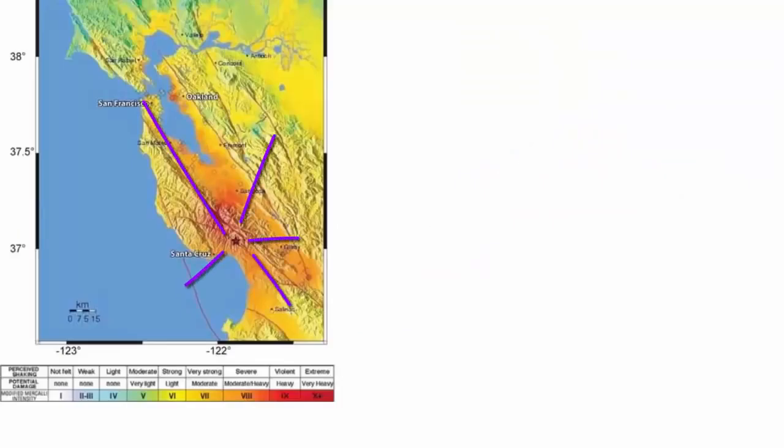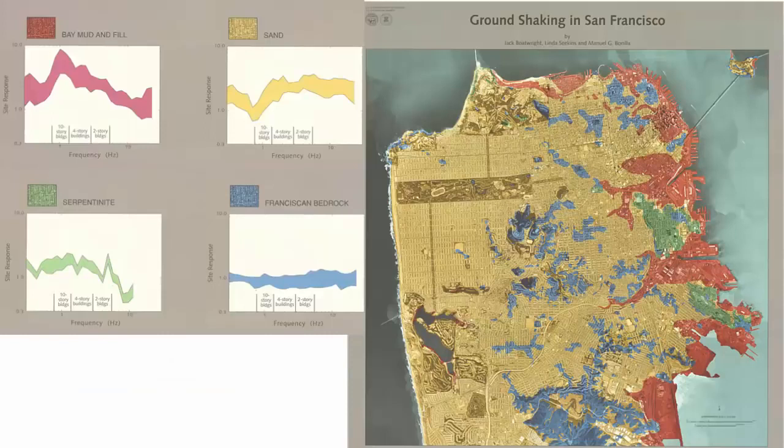In general, surface waves will dissipate the further one gets from the epicenter of an earthquake. However, surface wave intensity is impacted by the type of material they travel through. For example, as this shake map San Francisco shows, when each of these rock materials is subjected to earthquake waves, different amounts and types of shaking result.